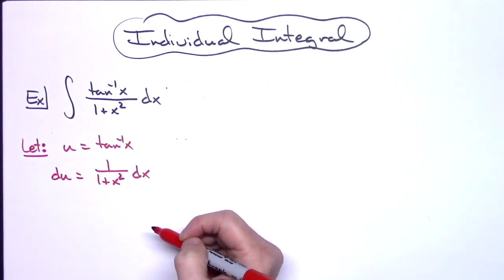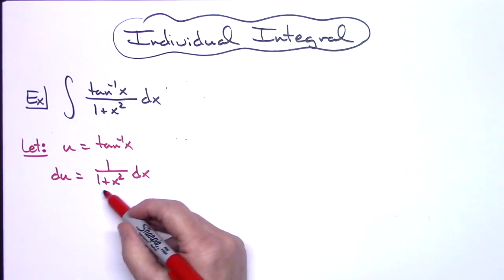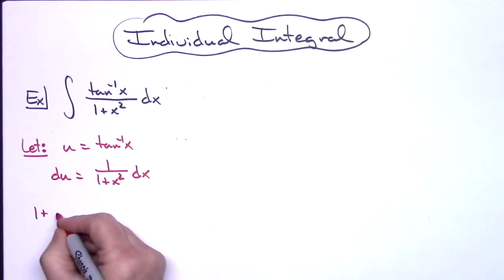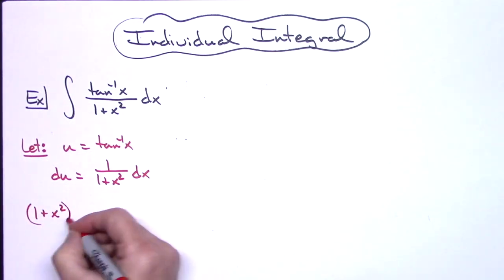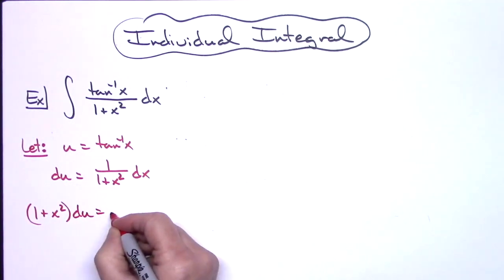I am going to go ahead and solve for that dx, multiplying both sides by 1 plus x squared. So I'll have 1 plus x squared times du equals dx.